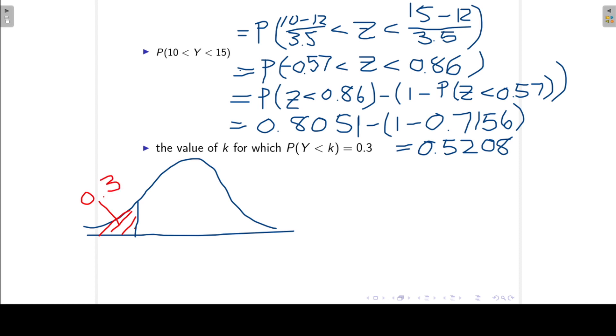So we know that the area to the left of k is 0.3, or because we know that the normal distribution is symmetrical, we know that the area to the left of minus k must be 0.7. So this area to the left of negative k must be 0.7. So we will start again by standardizing.